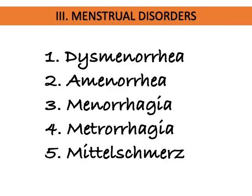Menstrual disorders include dysmenorrhea (painful menses), painful ovulation known as mittelschmerz, amenorrhea (cessation of menses — normal only in pregnancy and menopause), menorrhagia (heavy menstruation), and metrorrhagia (bleeding between periods). Some women experience both heavy and frequent menses, which is called menometrorrhagia.